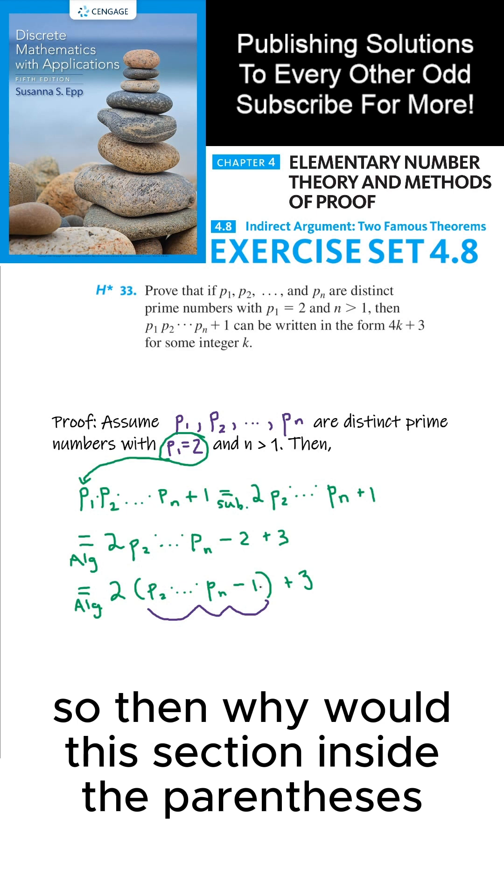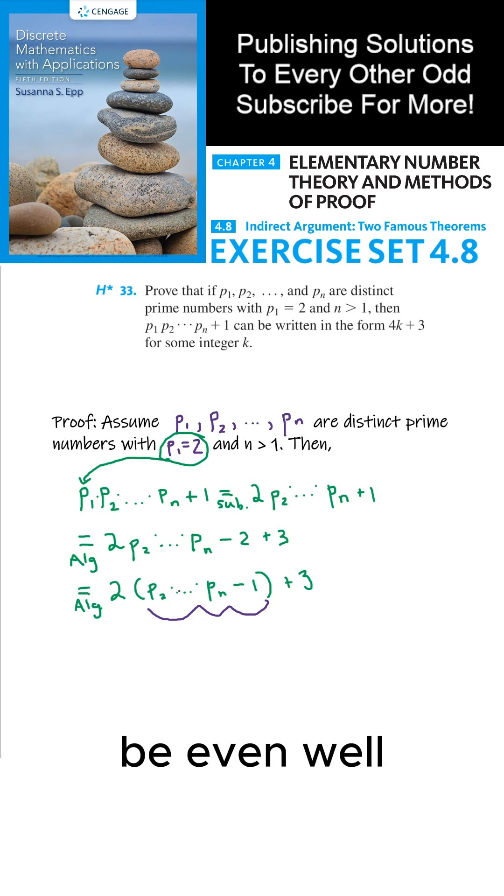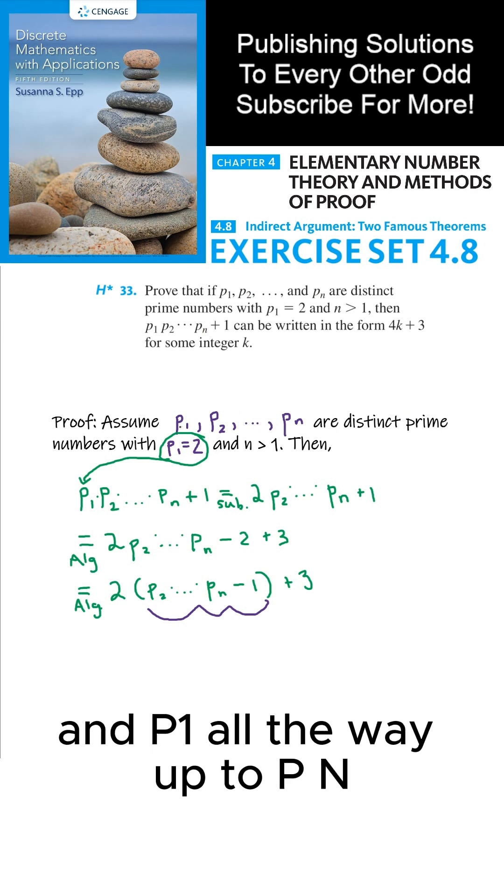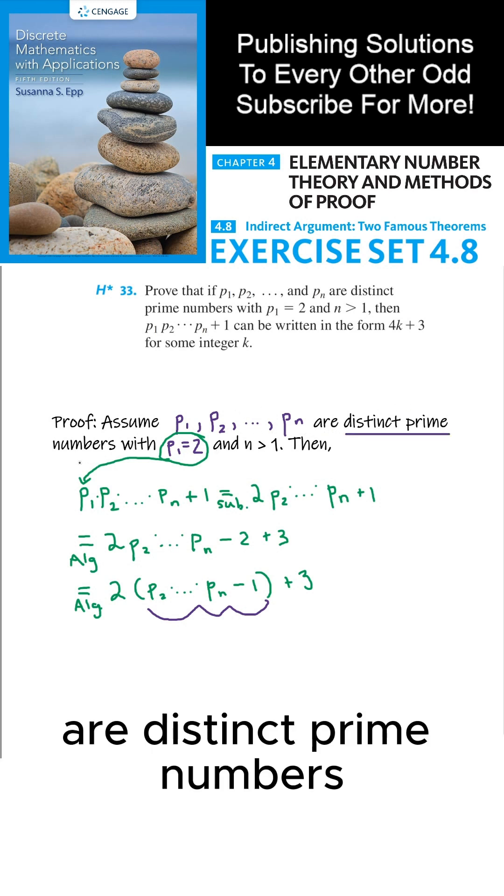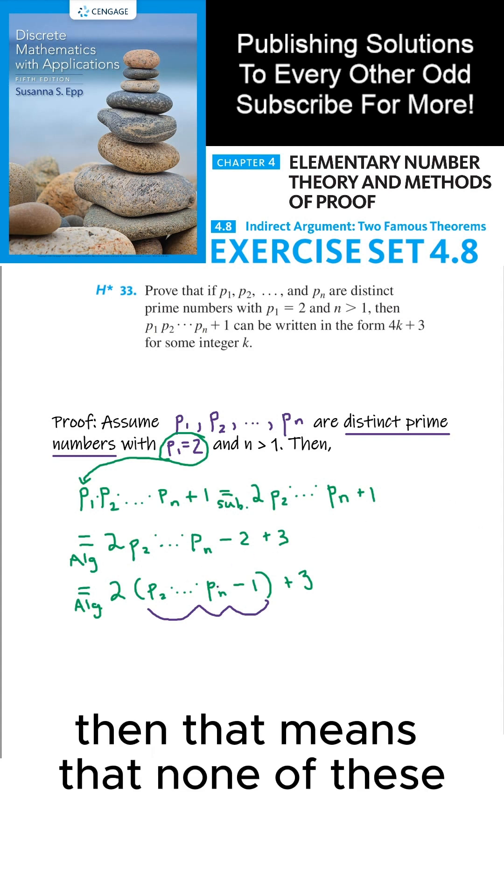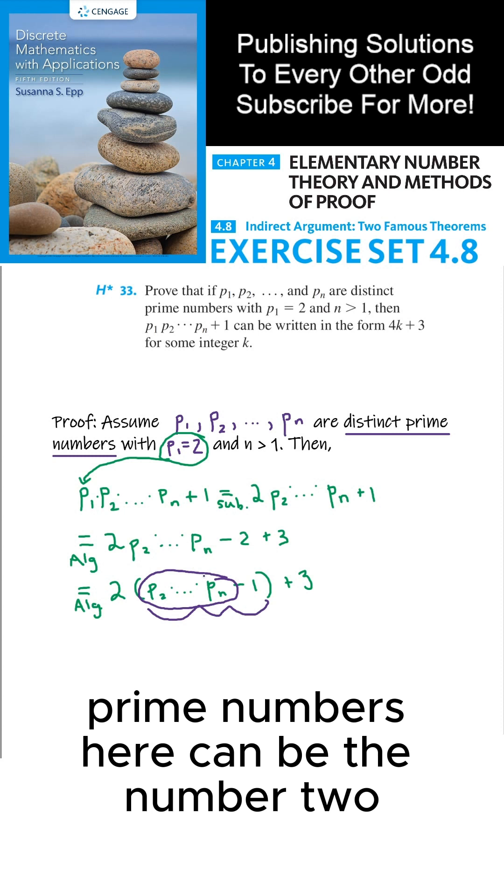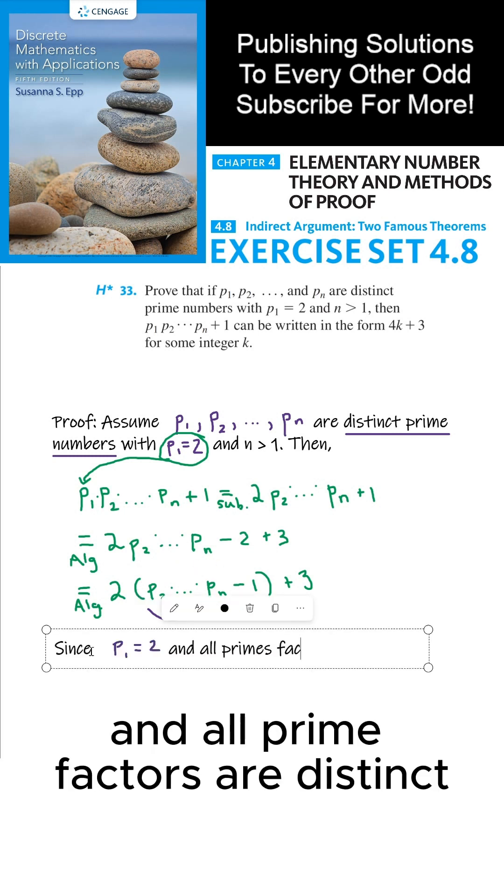So then why would this section inside the parentheses be even? Well, since p₁ was 2 and p₁ all the way up to pₙ are distinct prime numbers, then that means that none of these prime numbers here can be the number 2. So since p₁ equals 2 and all prime factors are distinct,